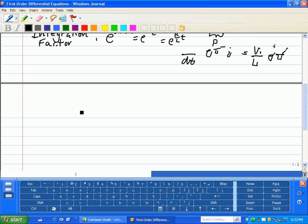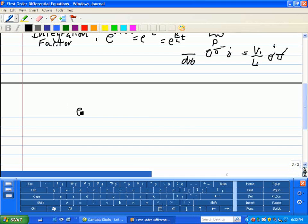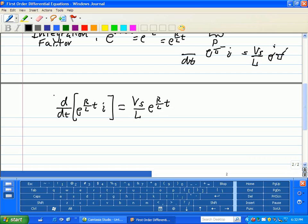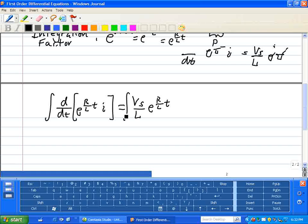So our solution is our integration factor for the left side, e to the R/L times t, and we take the derivative with respect to time of the quantity where our independent variable is i. Which is equal to Vs over L times e to the R/L times t. Integrate both sides of this equation with respect to dt.